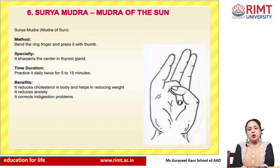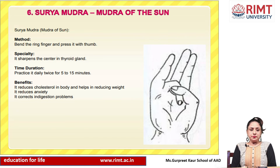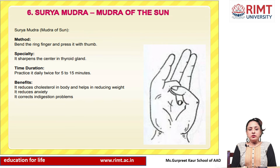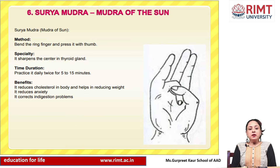Sixth is Sura Mudra, also called the Mudra of the Sun. Method: bend the ring finger and press it with the thumb. Specialty: it sharpens the center in the thyroid gland. Time duration: practice it daily twice for 5 to 15 minutes. Benefits: it reduces cholesterol in the body and helps in reducing weight. It also reduces anxiety and corrects indigestion problems.